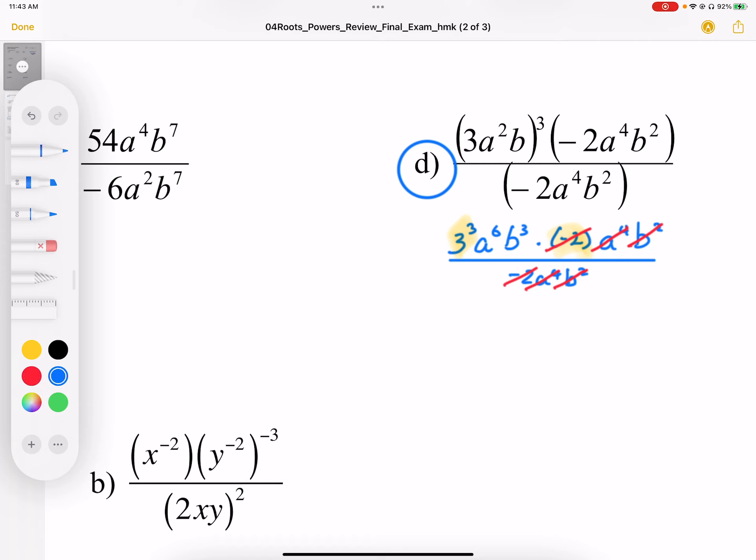So in the end, we're just going to be left with 27 a to the power of 6 b to the power of 3. Any time things cancel out, we're left with times 1, but times 1 is not going to change our answer here.